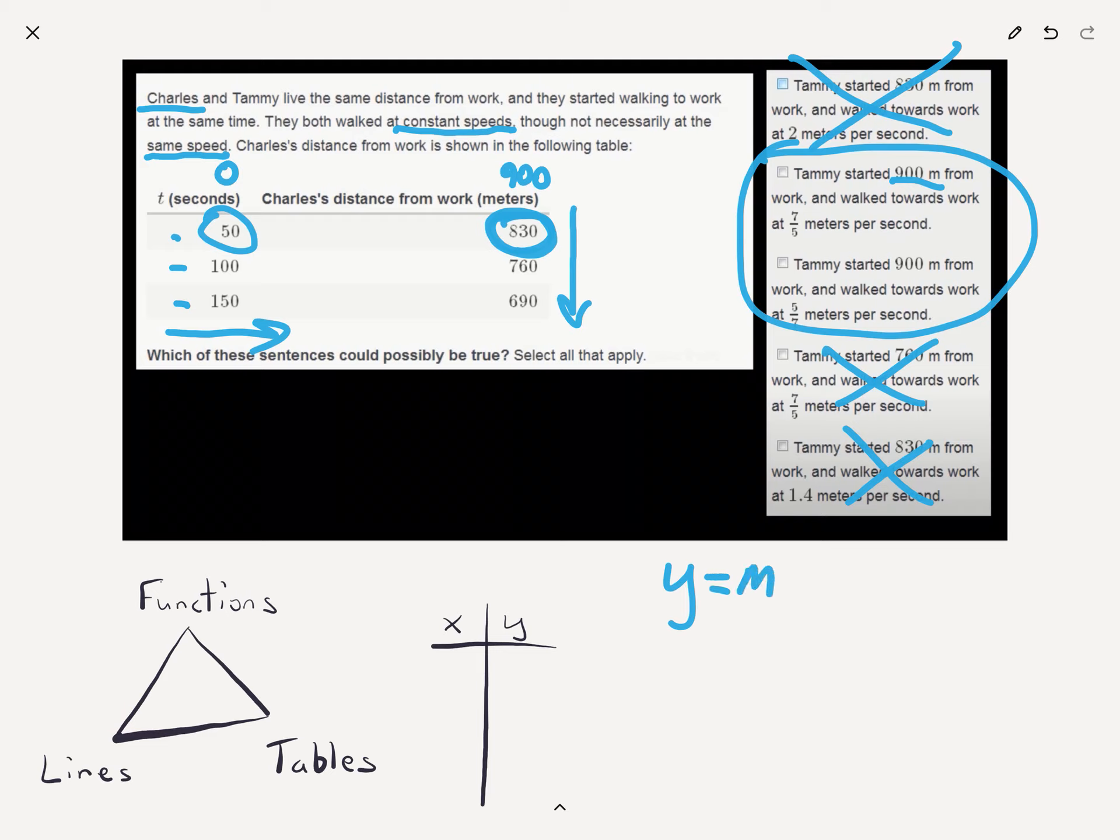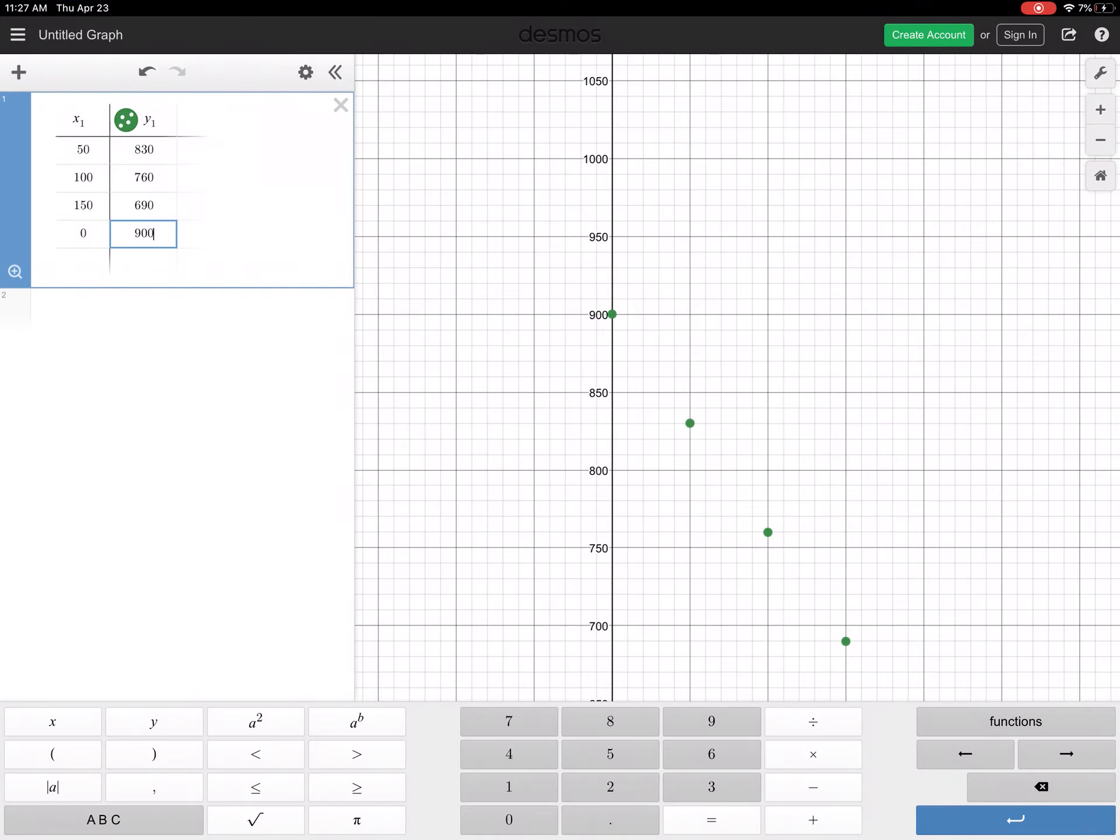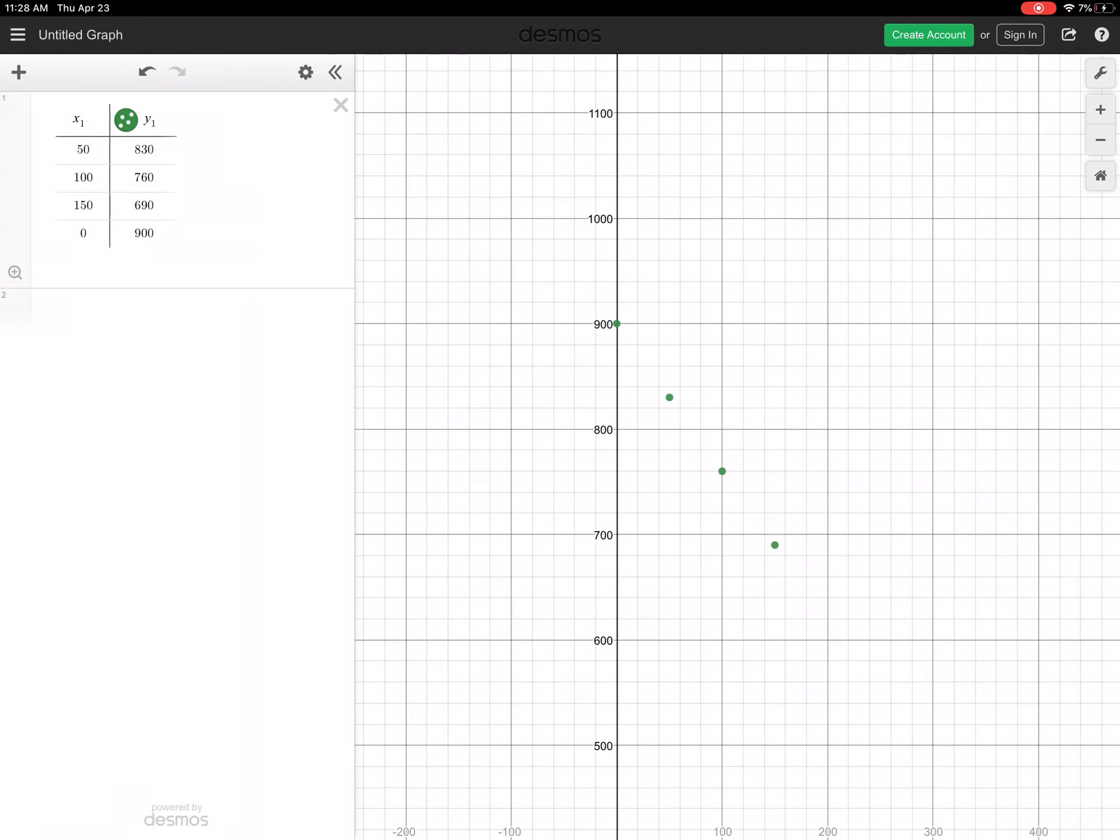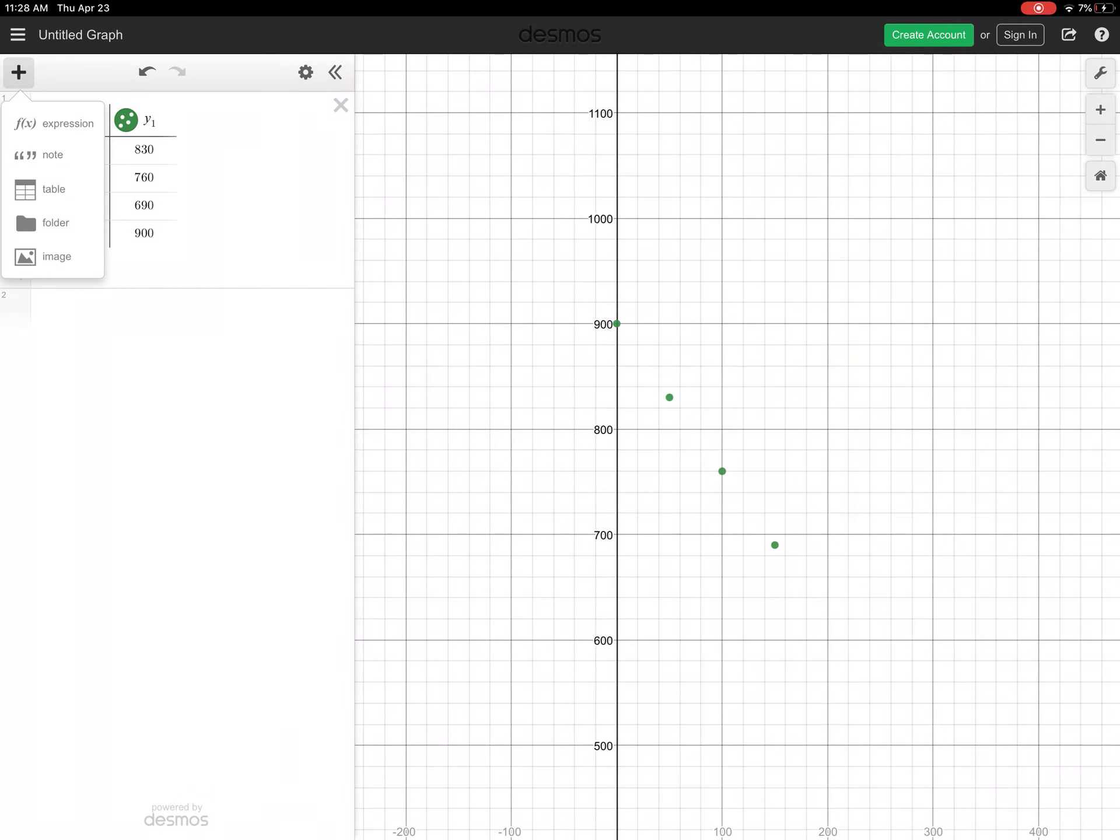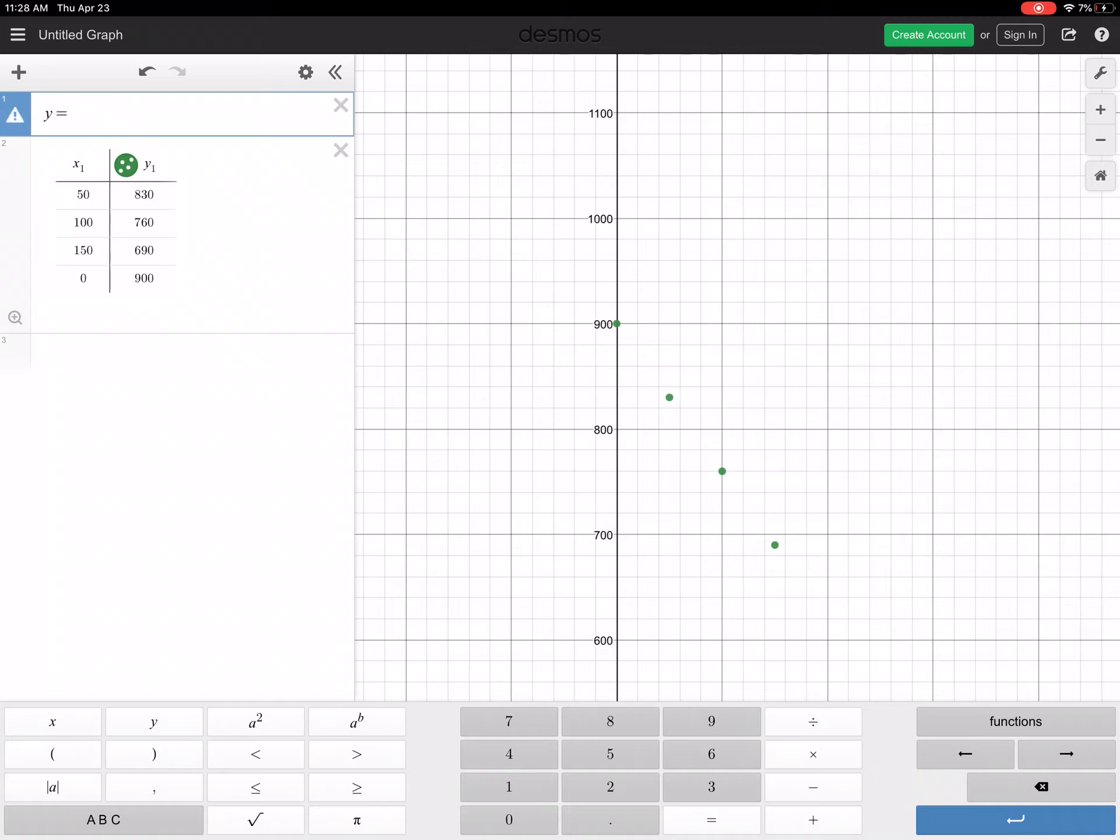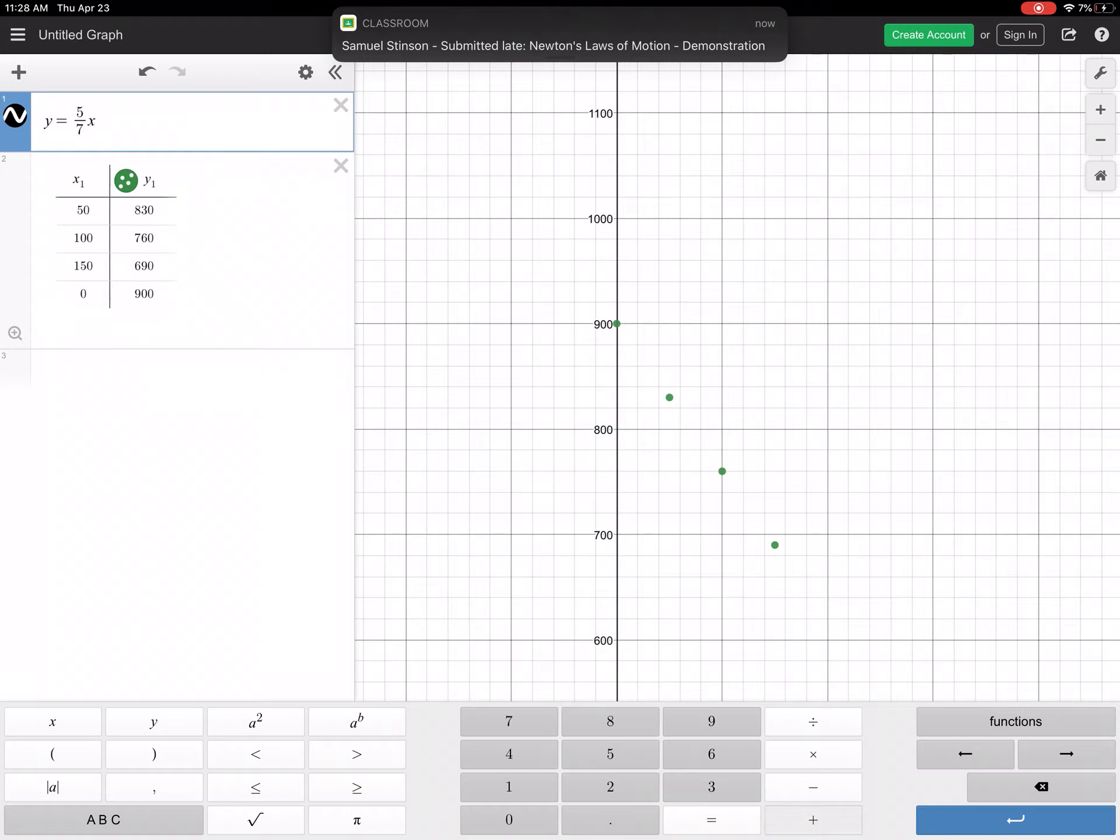We're looking for a y, an m, an x, and a b, okay? And our b, the clue to our b is right here, that Charles starts at 900 meters away from work. They walk the same distance, so Tammy has to start the same place. This is going to be a plus 900, okay? We won't know the y, and we won't know the x, but we will know the m, okay? So our m is either going to be the 7 fifths or the 5 sevenths, and we might have to try both and see which function creates a line that lands on top of Charles' points. Let's add an expression and try it out. y equals 5, not 5 minus, good lord, 5 sevenths x plus 900.